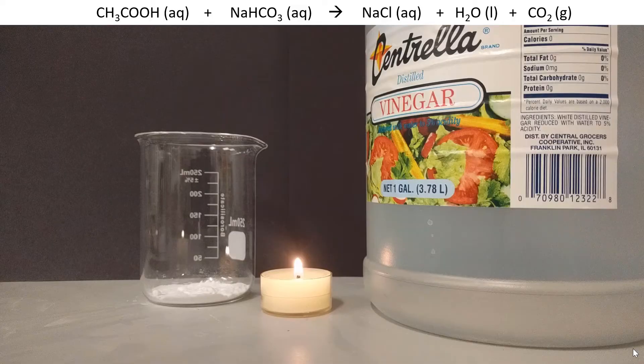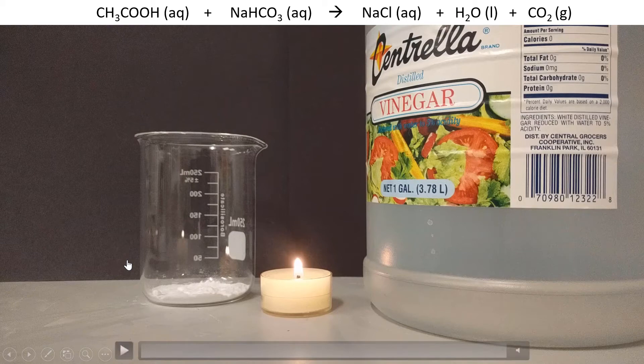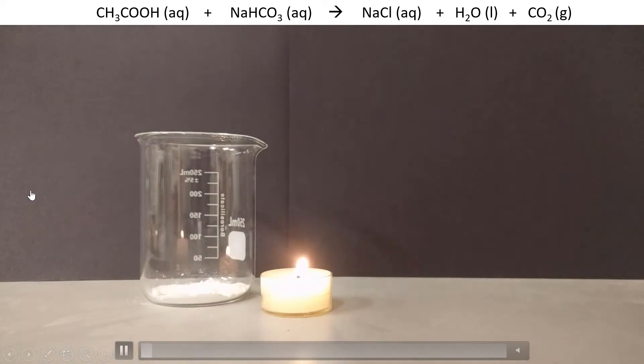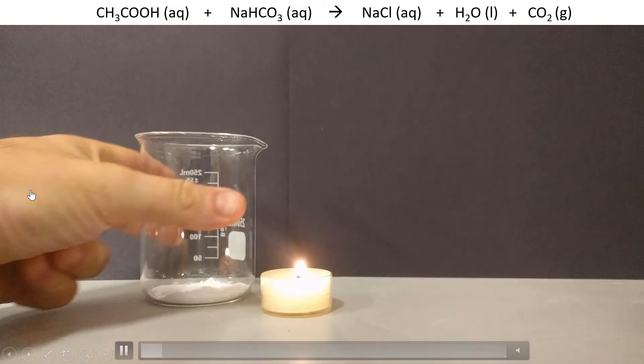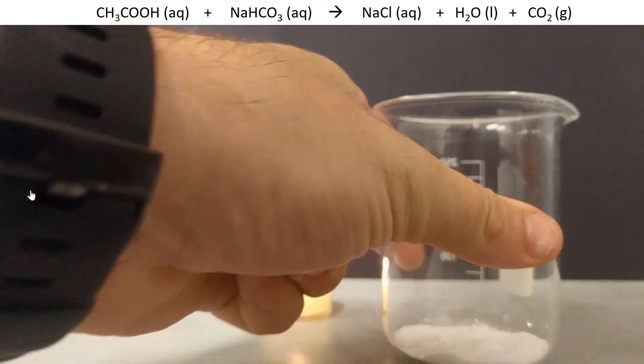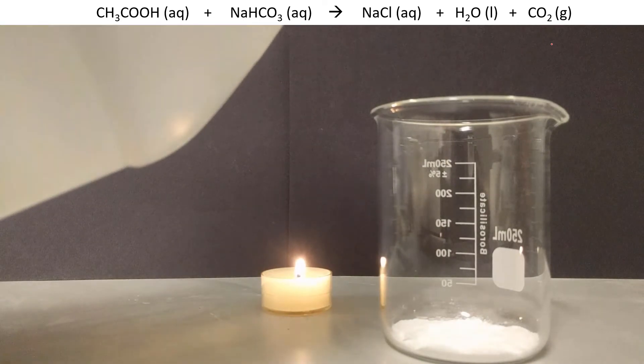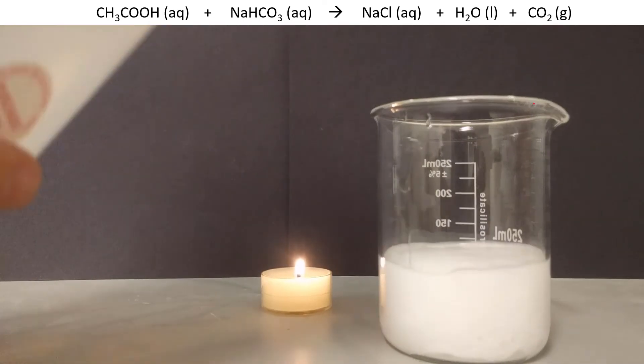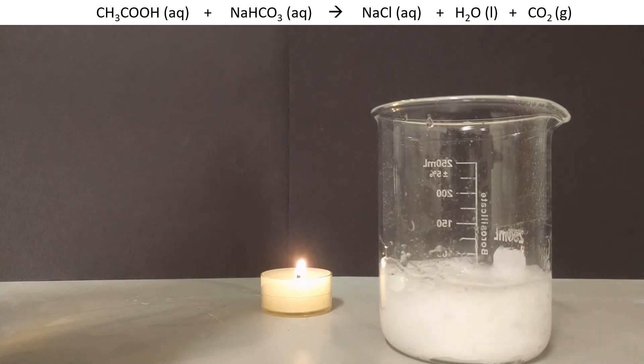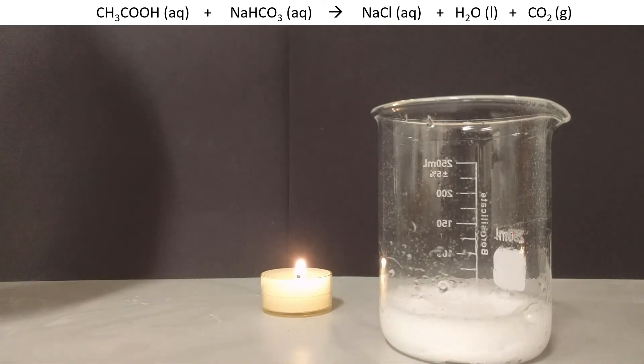So here's a classic kitchen chemistry example that you could probably do at home. If you have some vinegar and some baking soda, when you mix those two together, the acid is the vinegar and the baking soda is the base. And when they come together, one of the products they form is carbon dioxide gas. And you can see that in the form of bubbles. So you add some vinegar and you can see all these bubbles. All those bubbles are CO2, carbon dioxide.